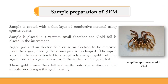For SEM sample preparation, the sample is coated with a thin layer of conducting material. If the material is not conductive, you must coat it with a conductive material — normally gold is used for that purpose, though aluminum can also be used. Here you can see a spider that has been sputter-coated in gold, ready for SEM analysis.